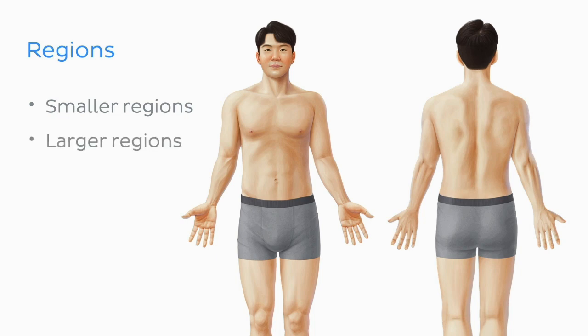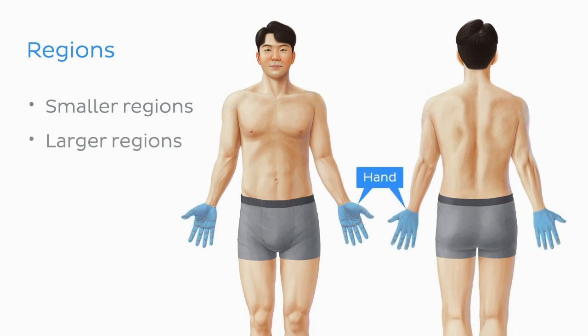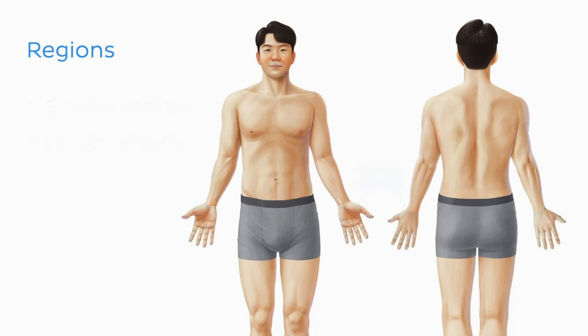Larger regions, like the entire shoulder, and more complex regions like the hand, are further organised into subdivisions. With this knowledge, we are ready to explore precisely how regions are assigned in the upper limb.